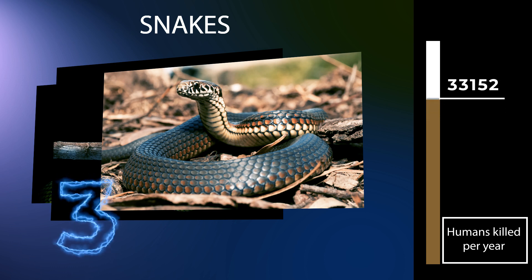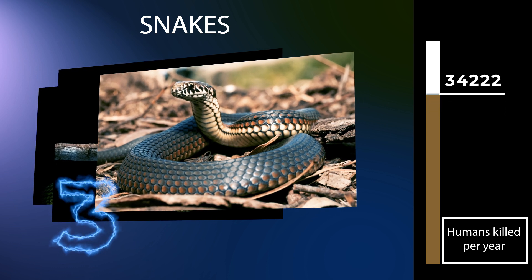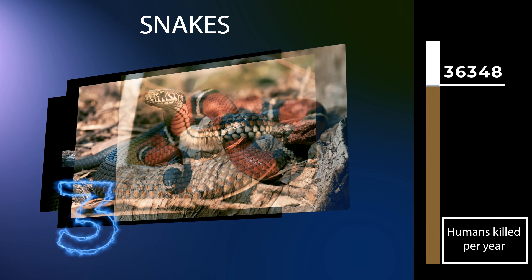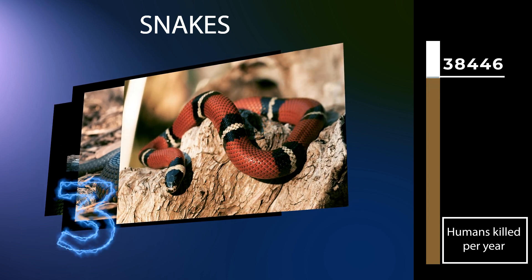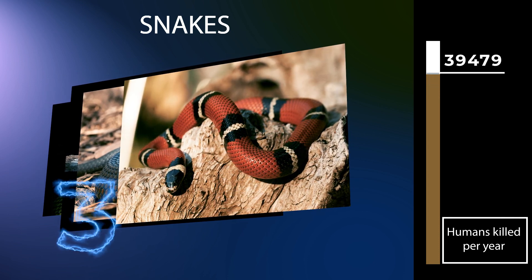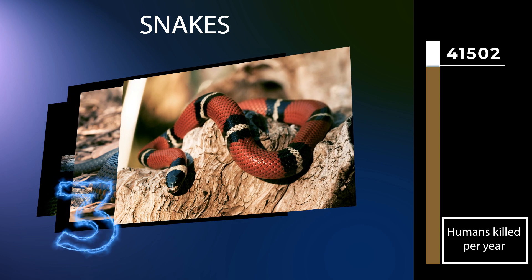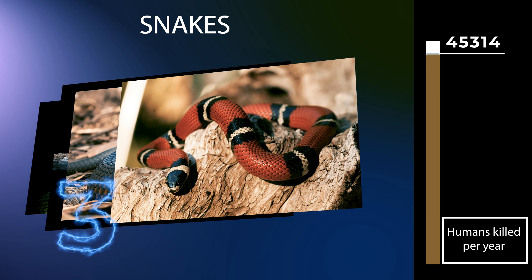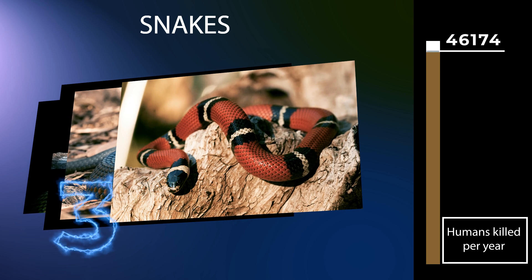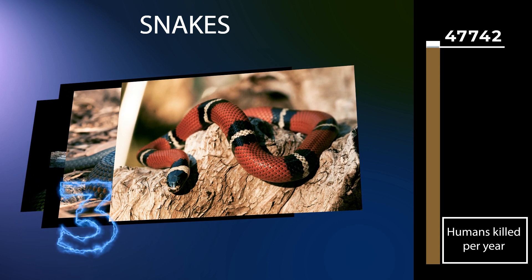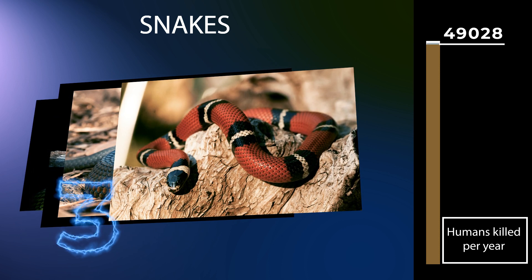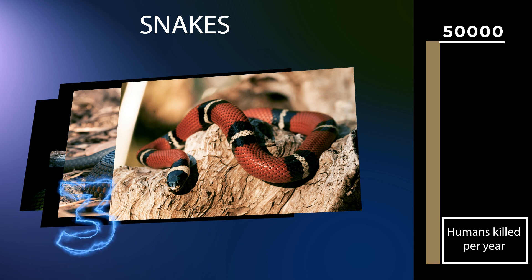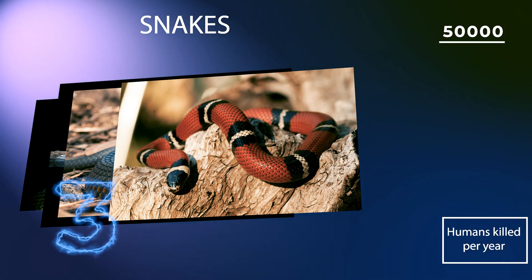Venom, like all salivary secretions, is a predigestant that initiates the breakdown of food into soluble compounds, facilitating proper digestion. Even non-venomous snake bites, like any animal bite, cause tissue damage. Snake venoms are complex mixtures of proteins and are stored in venom glands at the back of the head. In all venomous snakes, these glands open through ducts into grooved or hollow teeth in the upper jaw.